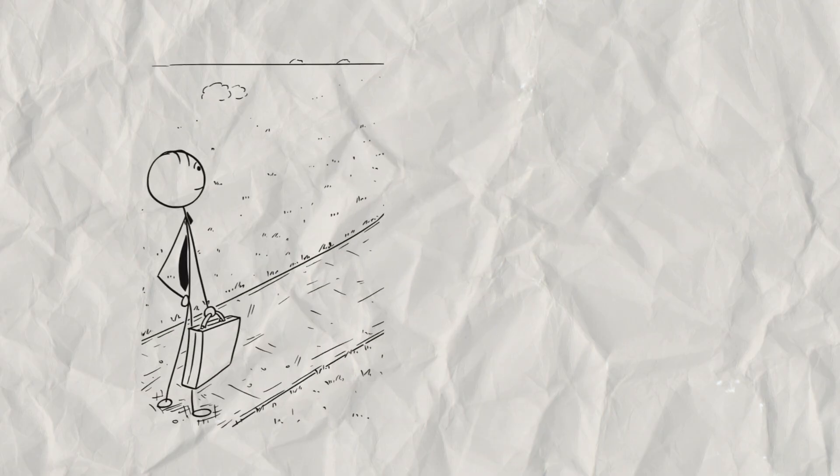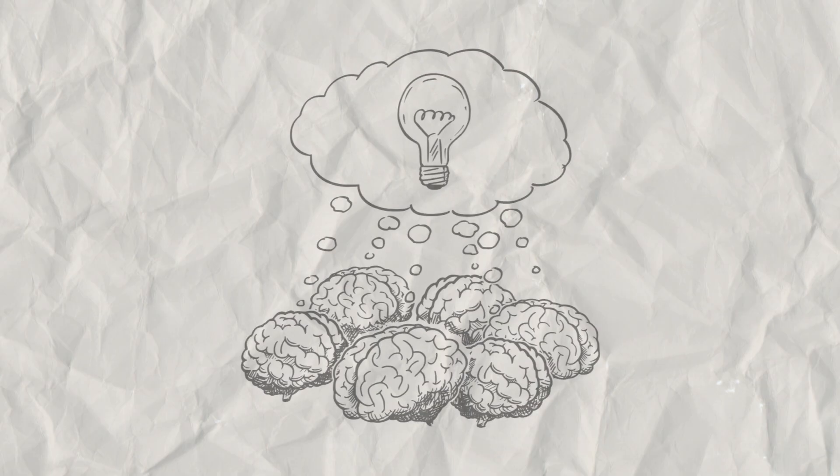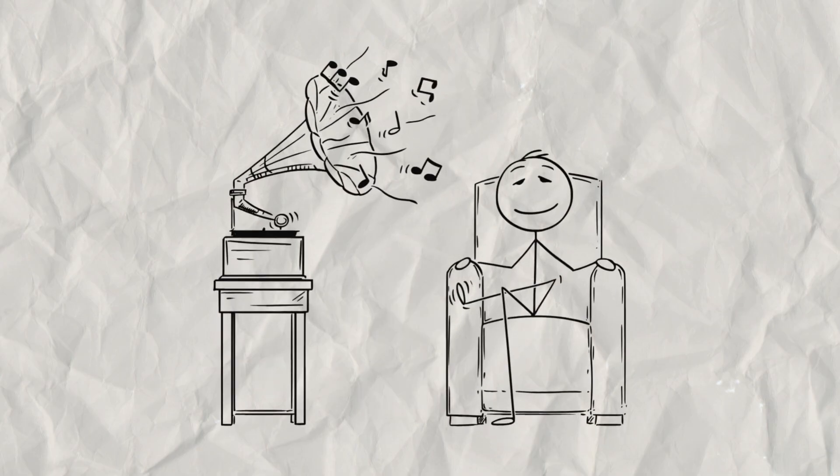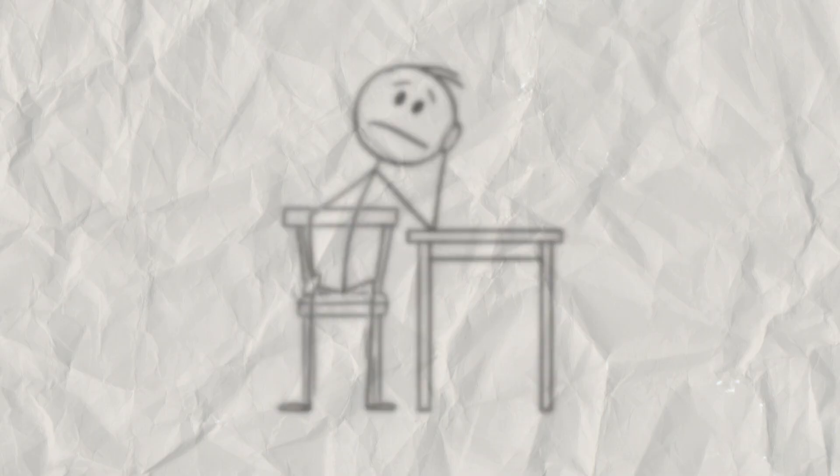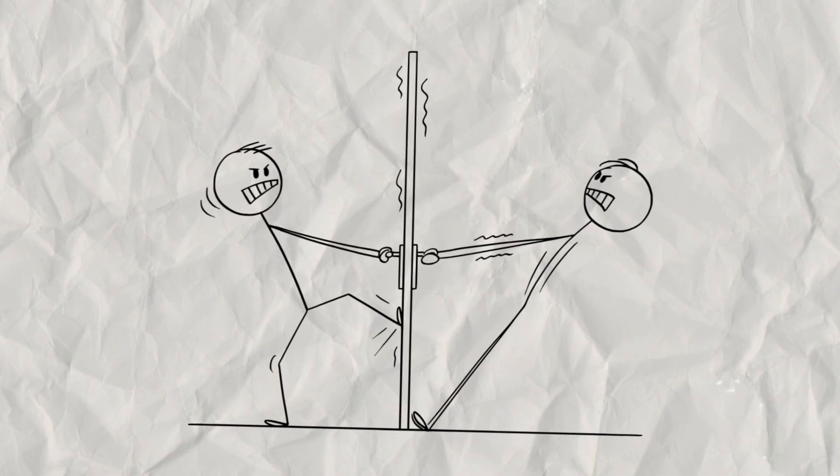As an adult, this messes up your reward system in two major ways. First, your brain can become less sensitive to normal pleasures. A calm, peaceful day doesn't give you a dopamine hit. It feels boring, empty, even a little bit scary. So you seek out chaos.